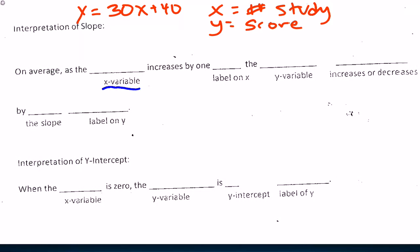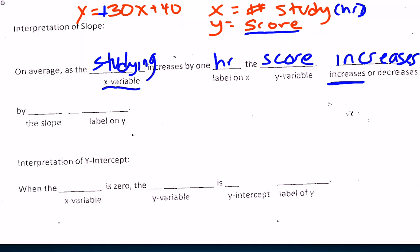So I start with filling my slope. On average, as the x variable, as my studying increases by 1, we said in terms of hours. The score is going to increase because my slope is positive, increases by my number, 30. And my score is going to be in terms of points, right? So 30 points.